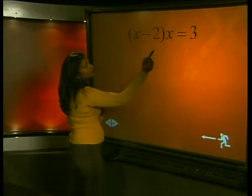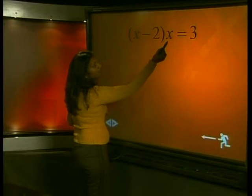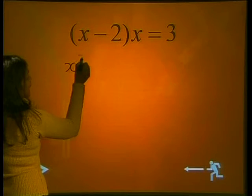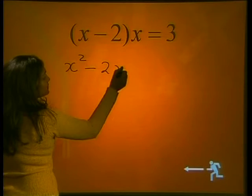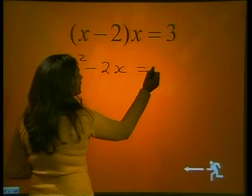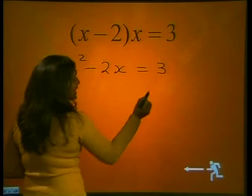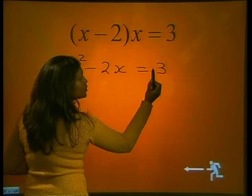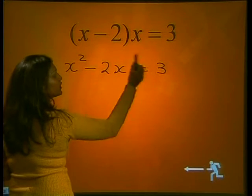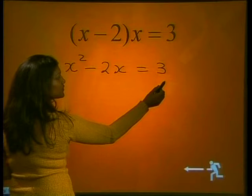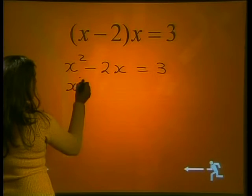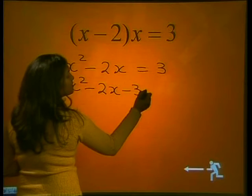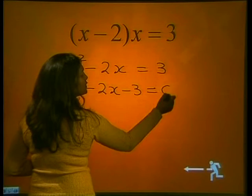The first thing we've got to do is multiply the x into the brackets and we get x squared minus 2x is equal to 3. Next, we want to get 0 on one side, so we subtract 3 from both sides of the equation and get x squared minus 2x minus 3 is equal to 0.